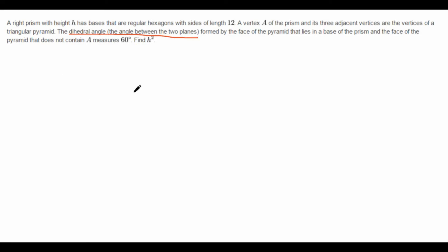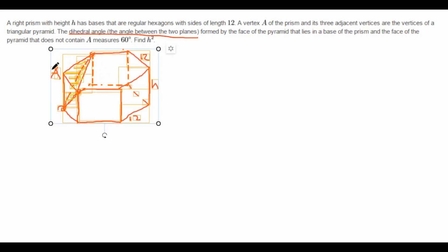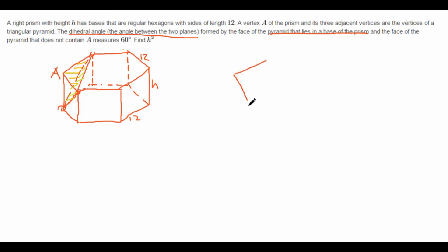So first, of course, we need to draw a diagram, and thankfully I already drew a diagram. Now we have that the face that lies in the base of the prism is the yellow one, and the face of the pyramid that does not contain A is the green one. The triangular pyramid is essentially just this shape, where this face and this face are the faces pointing towards you, and the other two faces are the ones away from you. So we want to find this angle.